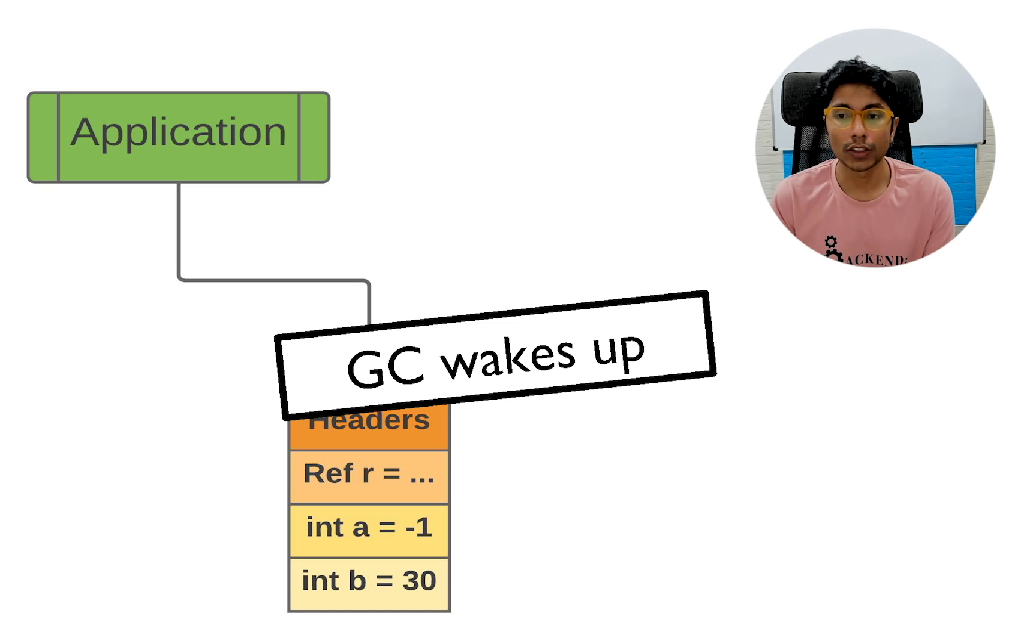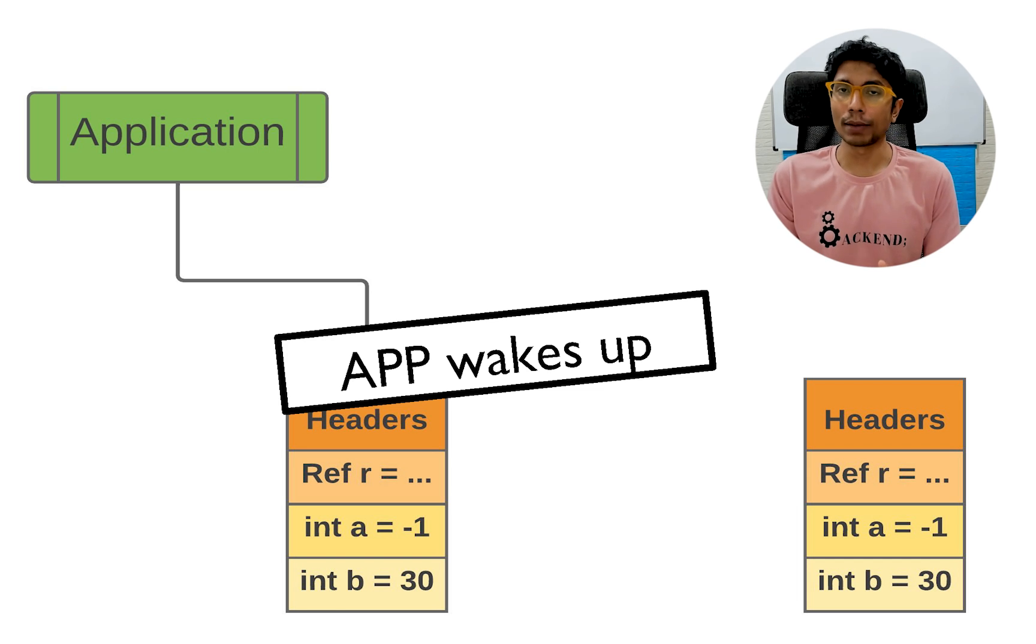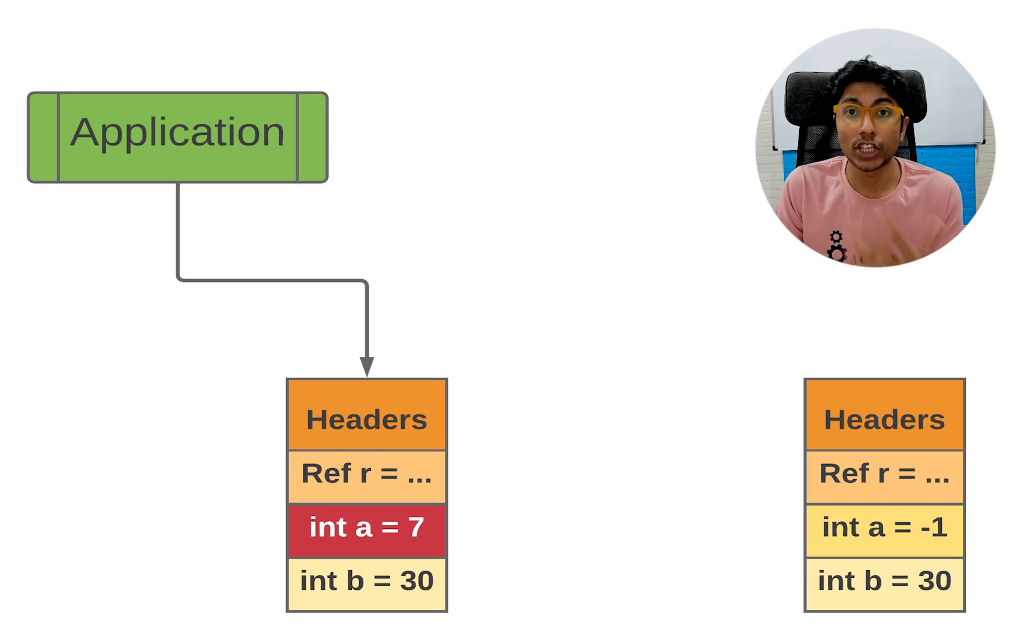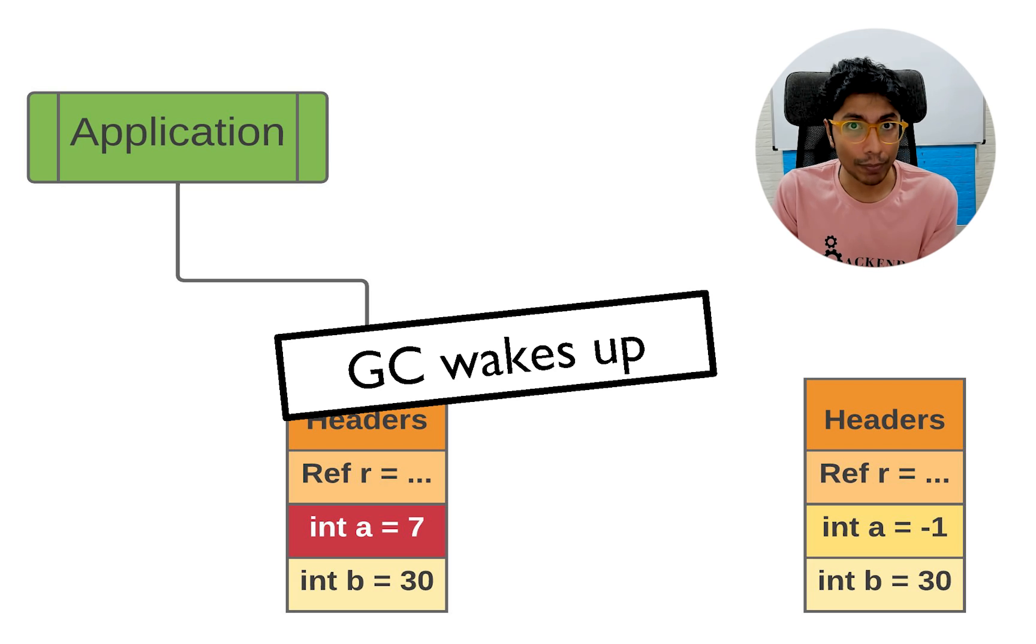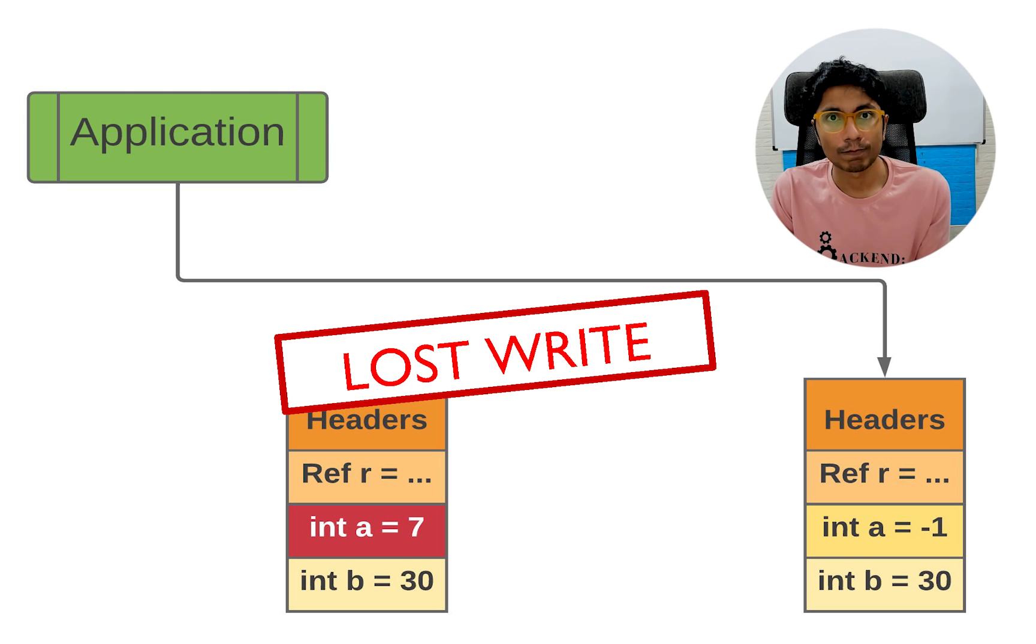The application is pointing to this object. And now the garbage collector wakes up and says, all right, I need to compact things. I need to put all objects together in one space. This object goes over there. But it can't send it over there, it has to copy it and then delete the reference later. So it makes the copy and then suddenly the application wakes up. This is a concurrent program. You have the GC getting some time slice from the operating system to do some job, in which case it was able to copy. Just after the copy, the application got a time slice and now it can do something. And what does it do? It makes a change. It makes an update operation. a from minus one became seven. This is a problem because when the garbage collector wakes up, it's going to change the pointer and now a is no longer equal to seven, is equal to minus one. You have a lost write.